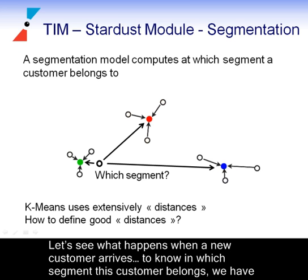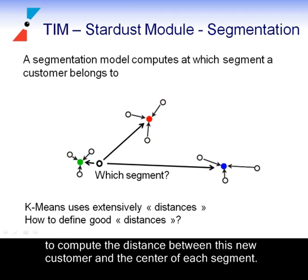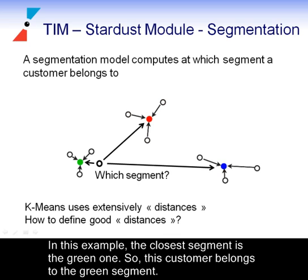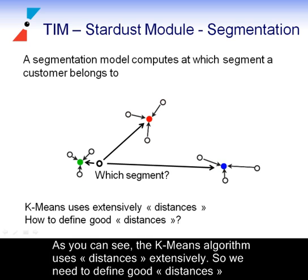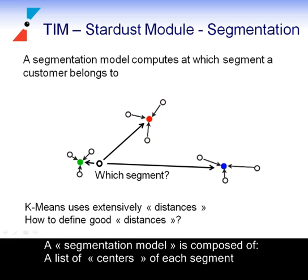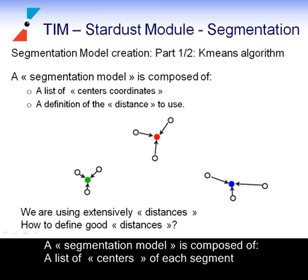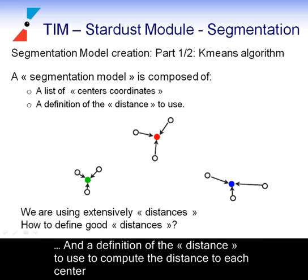Let's see what happens when a new customer arrives. To know in which segment this customer belongs, we have to compute the distance between this new customer and the centre of each segment. In this example, the closest segment is the green one, so this customer belongs to the green segment. As you can see, the K-Means algorithm uses distances extensively, so we need to define good distances. The segmentation model is composed of a list of centres of each segment and a definition of the distance to use to compute the distance to each centre.